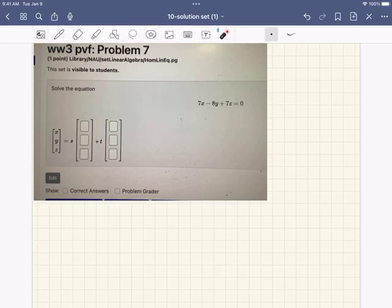In this video, we're going to show how to solve problem 7 of Webwork 3, parametric vector form. So we want to solve the equation given by 7x minus 8y plus 7z equals 0, which is a linear system, but of course this is just a single equation. And we want to put 6 numbers to represent the PVF.